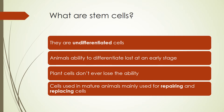Stem cells are undifferentiated cells, and what that means is that they don't have the features that some cells have to carry out a function. They're basically like blank scrabble pieces where they don't have a particular function yet. They can acquire features that will help them carry out a function, but they don't yet have specialized features in order to do this.